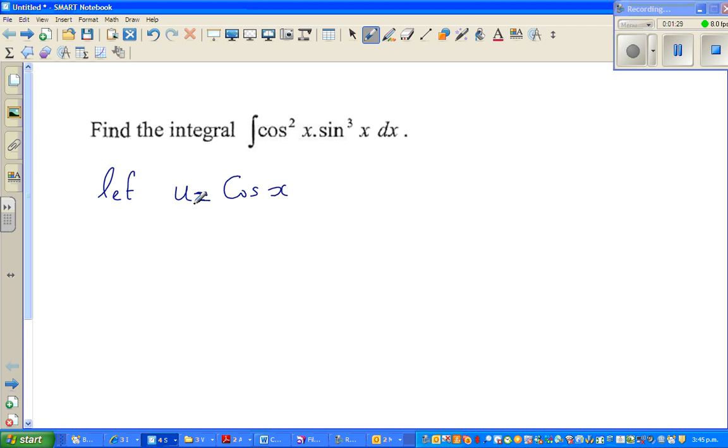So if u equals cos x, this implies u squared equals cos squared x. Okay, so whenever you're doing a substitution, you need to change everything in terms of u, even this dx in terms of u.